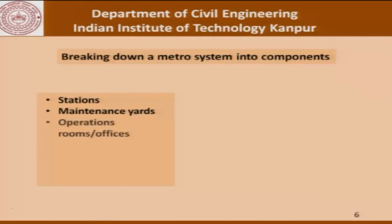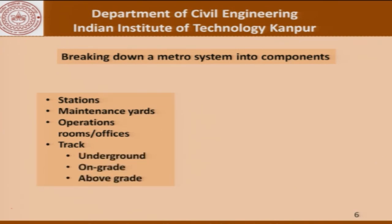Similarly, there are operations rooms and offices where different people associated with metro operations will work from, and that has to be planned. There could be tracks, and if you pause to think about some of the metro systems you may have seen, the tracks could be underground, on grade, or above grade. Depending on whether the tracks are underground, on grade, or above grade, different aspects come into play. As engineers, we need to understand these issues so that we are able to handle them as they arise during design or during construction.